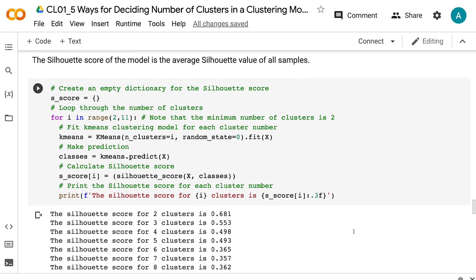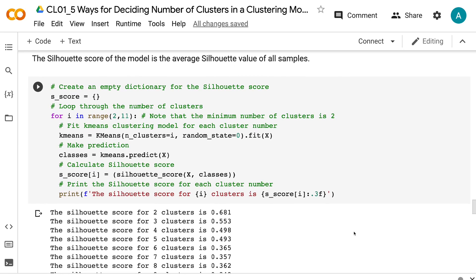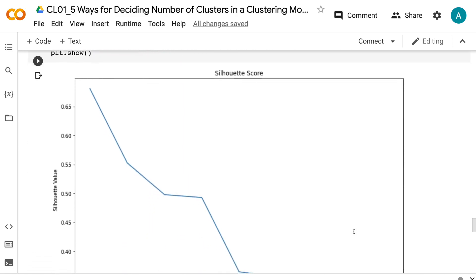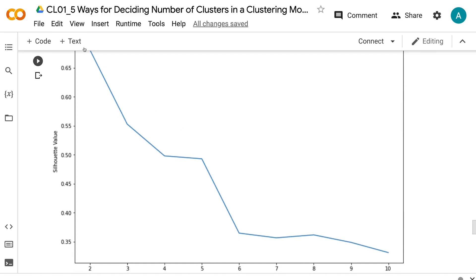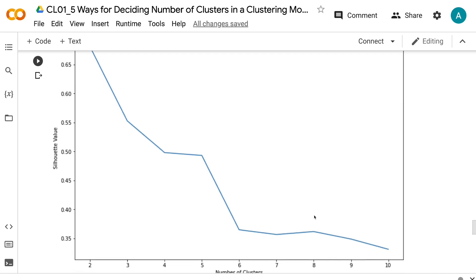The silhouette score of the model is the average silhouette value of all samples. From the visualization, we can see that the model with two clusters has the highest value of silhouette score. And the model with three clusters has the second highest value. So we get the consistent result that there are two or three clusters.